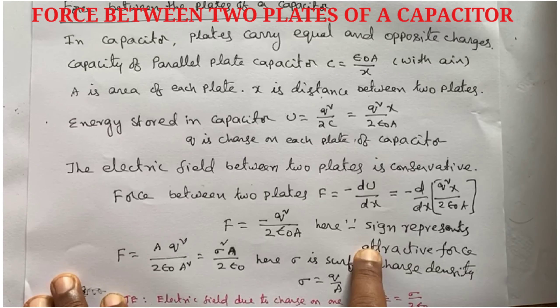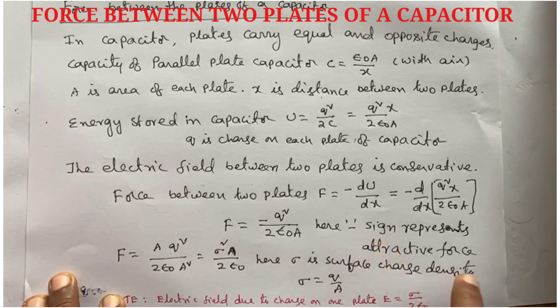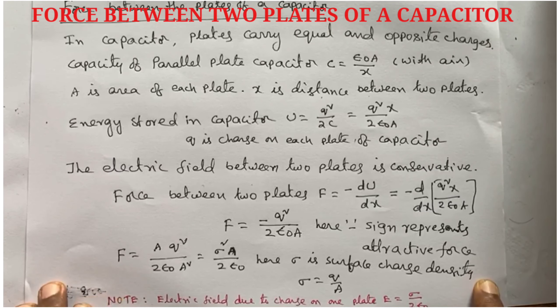Differentiate the energy with respect to x to get the force: F equals minus q square by 2 epsilon not A. The minus sign represents the attractive force between the two plates. F equals q square by 2 epsilon not A square. Multiply with A and divide with A.